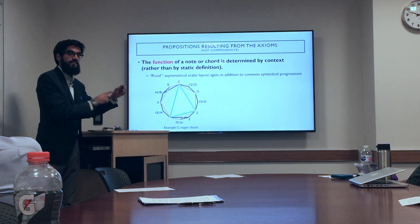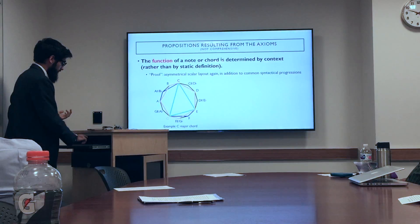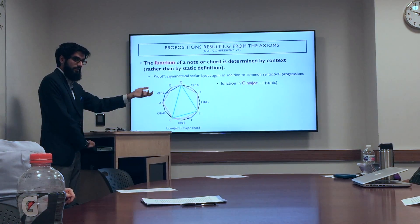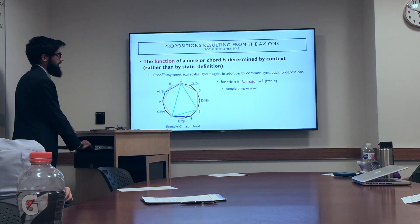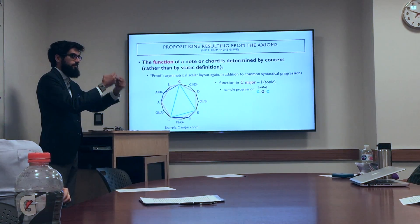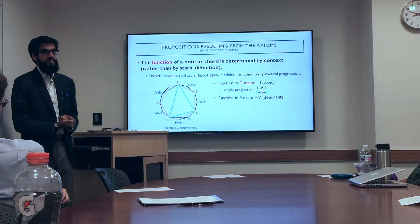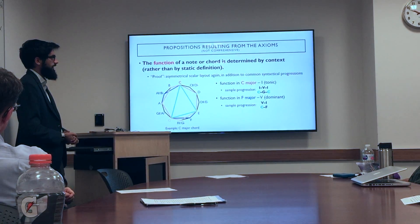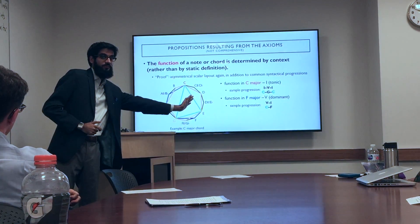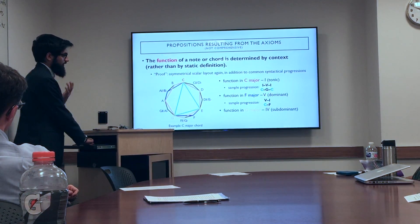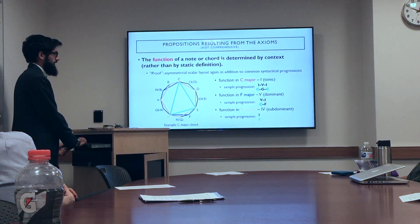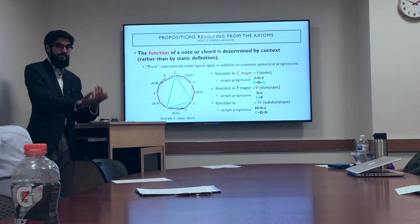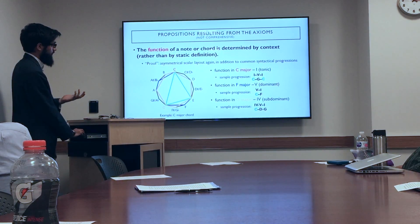In each of these different keys, the C major chord — the same sonority — functions differently. In the key of C major, it functions as a tonic chord, and a sample progression sounds like this. In F major, C major is no longer functioning as a tonic chord despite being the exact same sonority. In G major it functions as a subdominant. If I were to stop the audio right after the C major chord, you would not be able to tell me which key we're in — it's only the subsequent chords which retrospectively contextualize it.